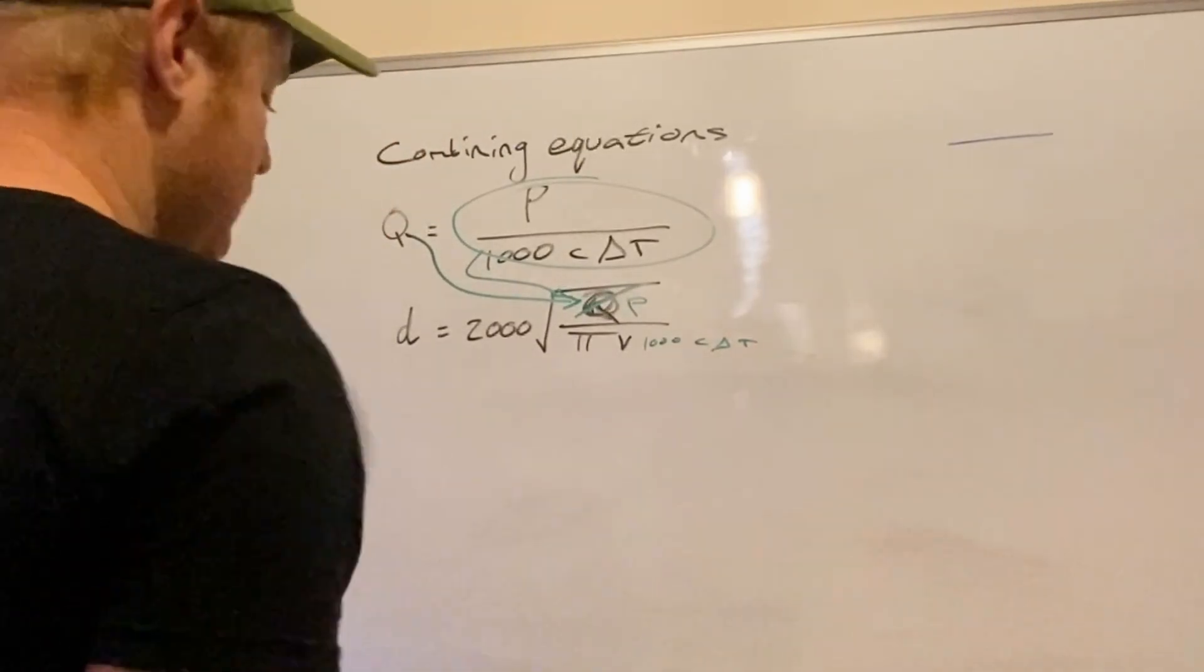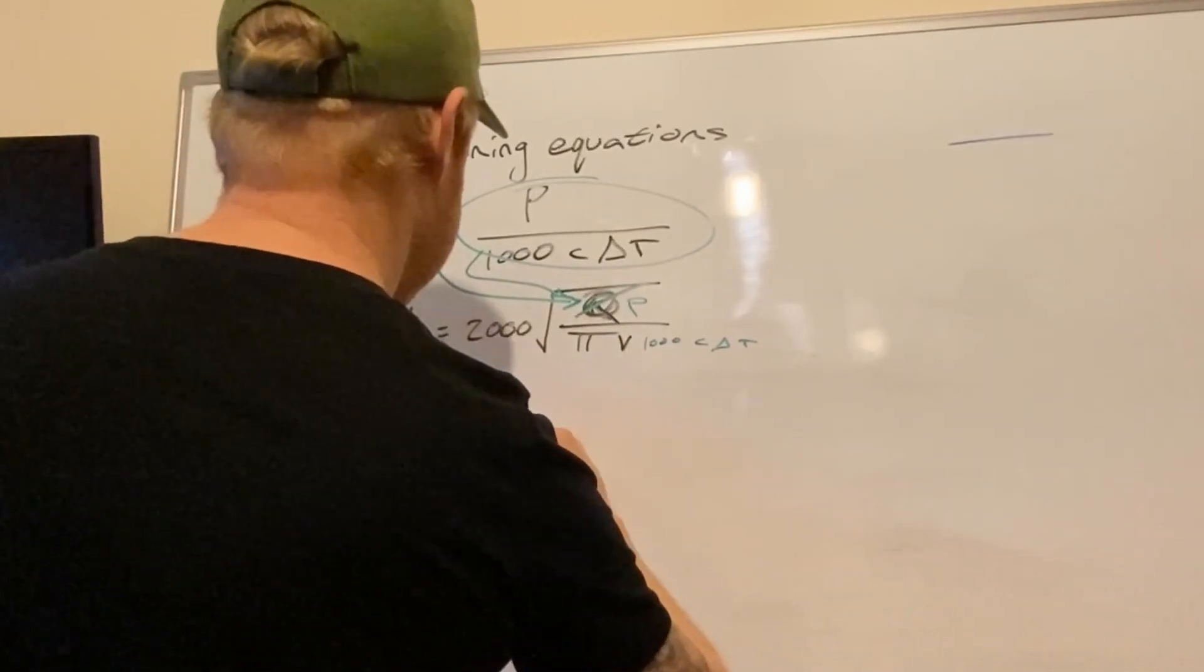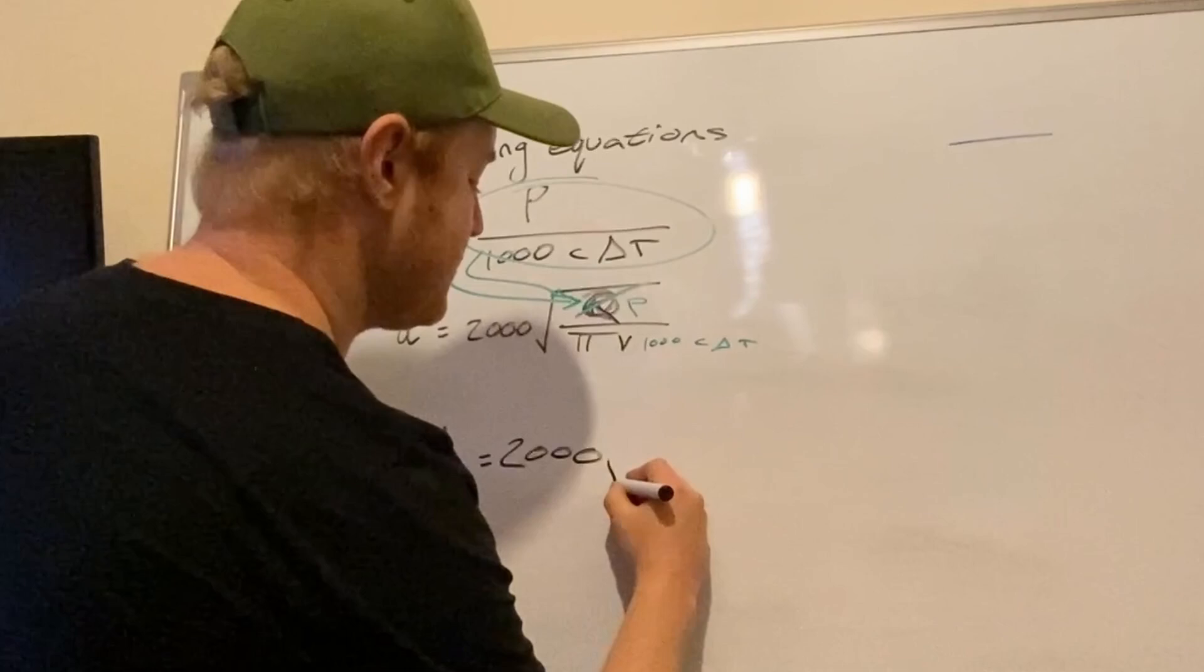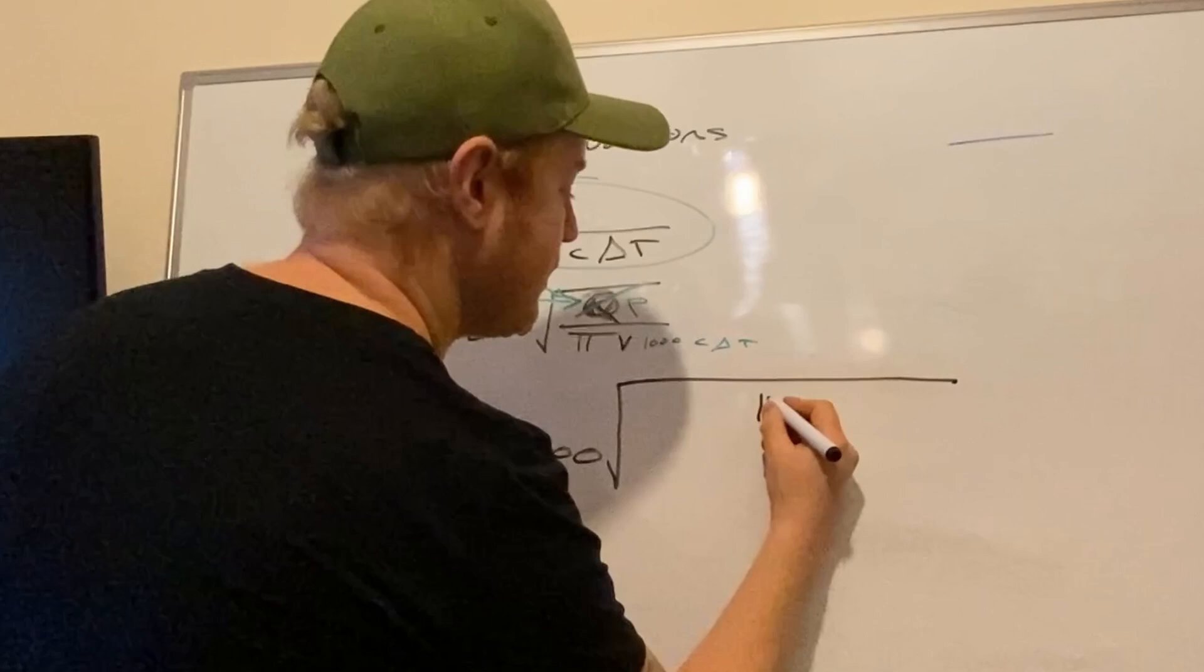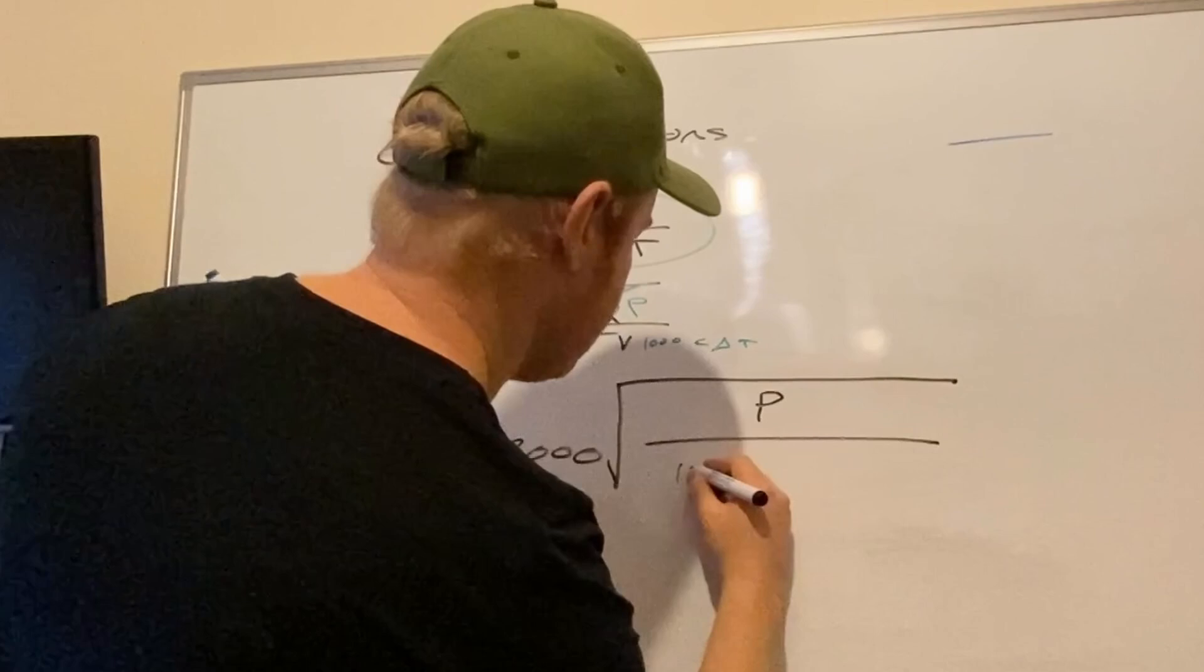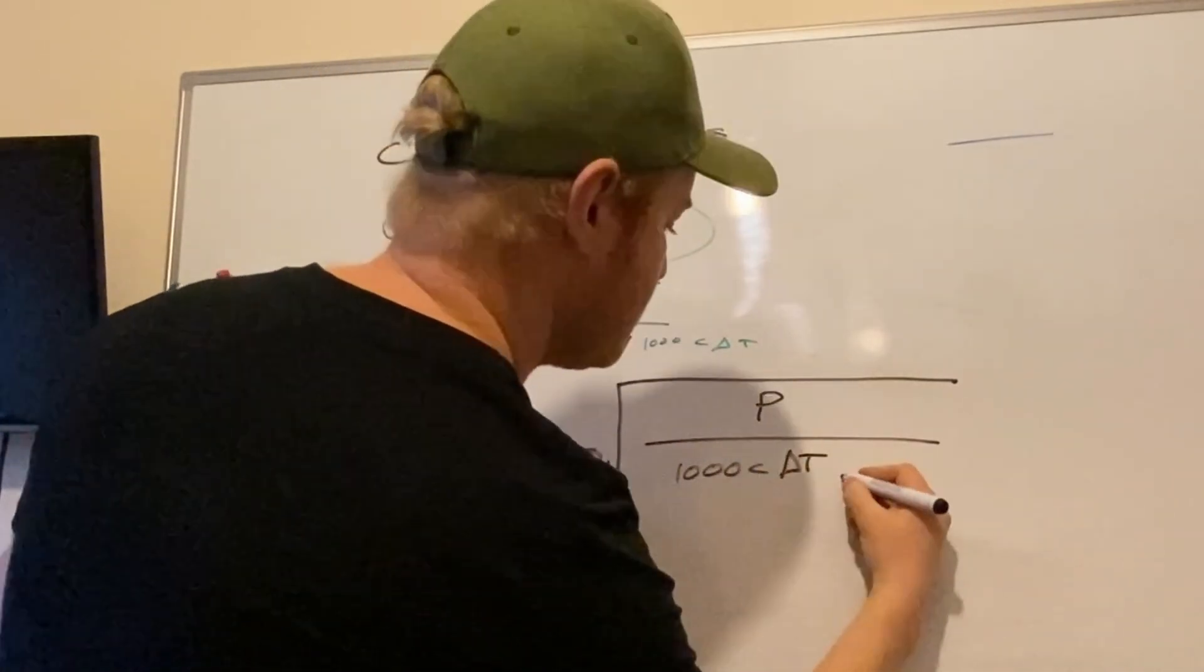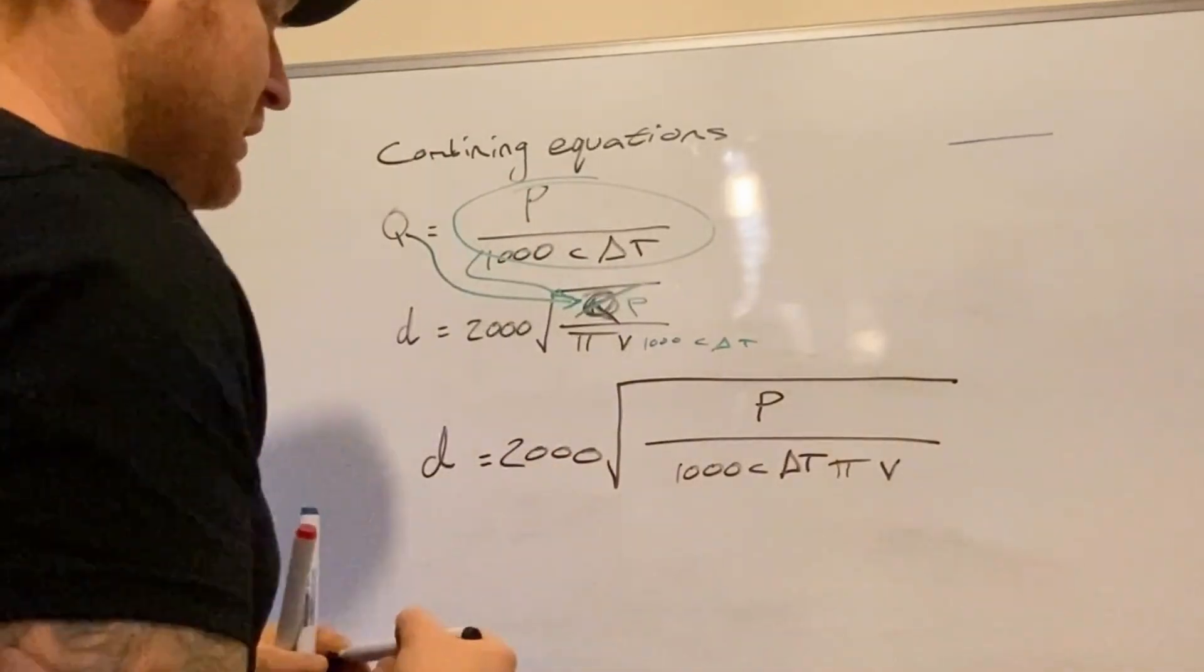So if we write out longhand, the longhand equation is diameter equals two thousand times the square root of power divided by one thousand times specific heat capacity times delta T times π times velocity. And that's it.